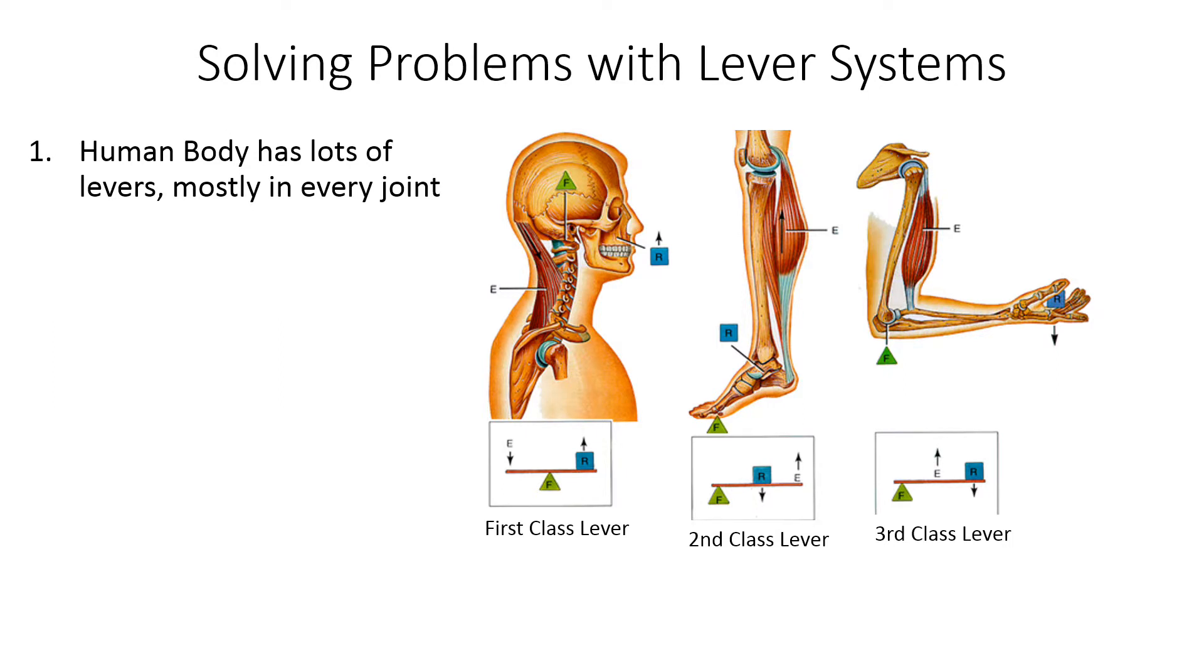muscle or the load on the bone, things like that? How do we solve all of these lever problems? Because we don't know the direction of the force on the fulcrum, and also this force is also